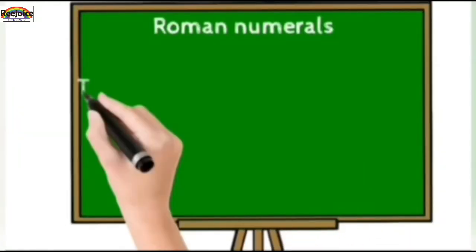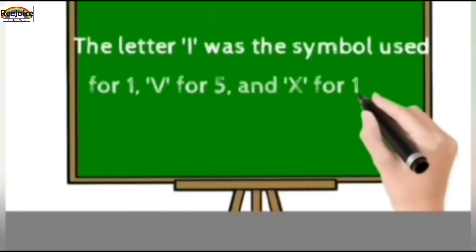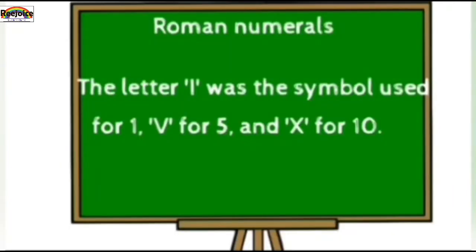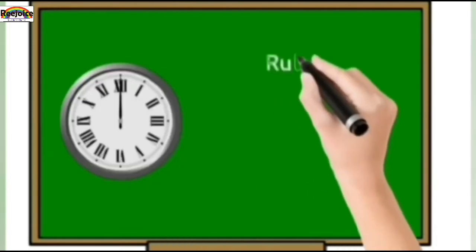5th Standard Mass Part 1, Chapter 1: Roman Numerals. The letter I was the symbol used for 1, V for 5, and X for 10. So, Roman Numerals — what are the symbols? The letter I was the symbol used for 1, V was the symbol used for 5, and X was the symbol used for 10. So, there are some letters which are used as symbols for numbers. Now let's see what rules are there.